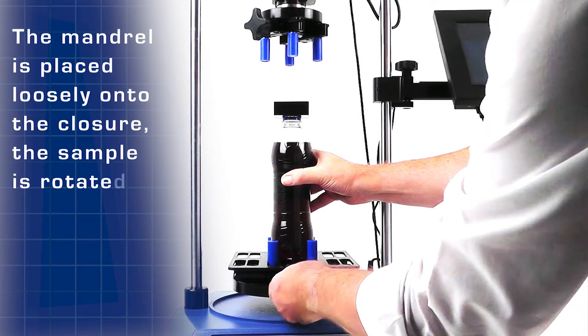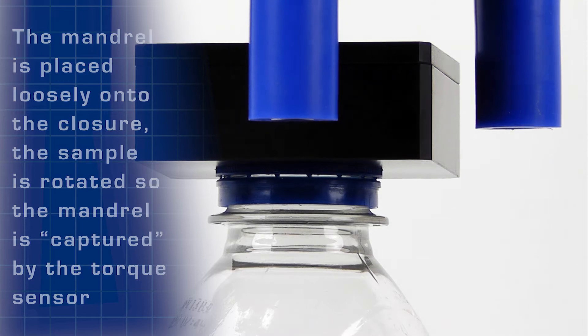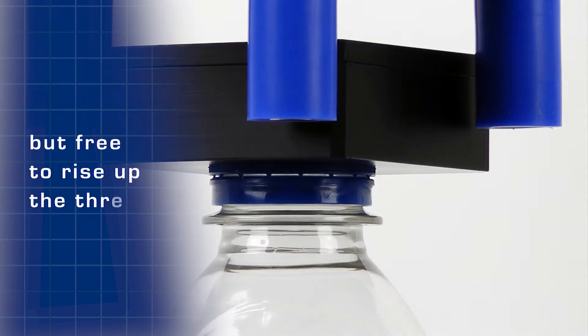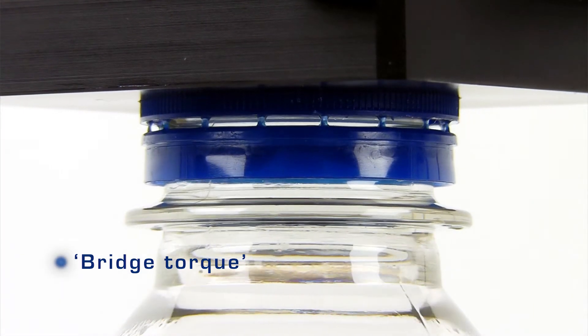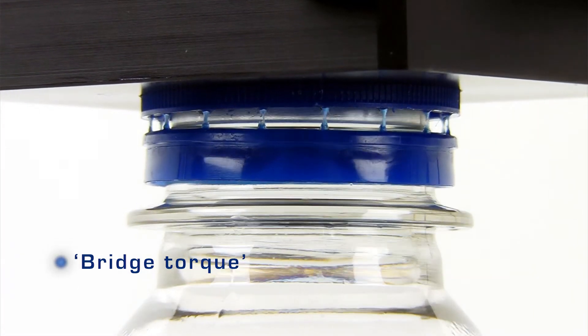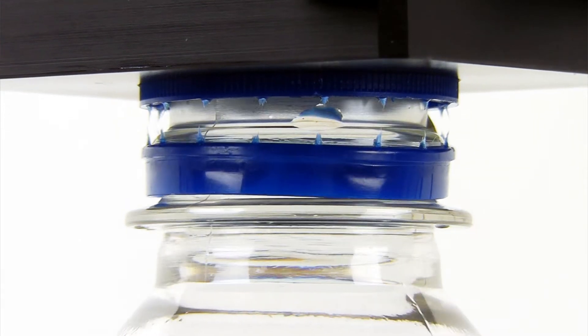With the mandrel placed loosely onto the closure, the sample is rotated so that the mandrel is captured by the torque sensor, but the closure is free to rise up the thread. By doing this, we also eliminate error that would otherwise be introduced from parasitic top loading.